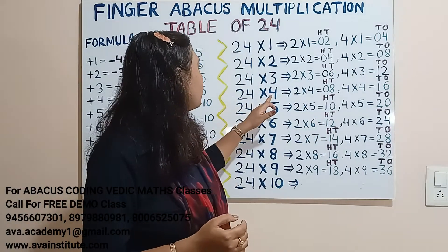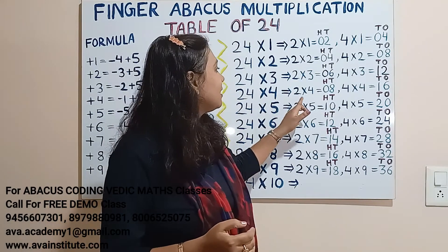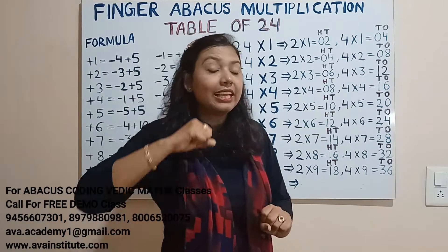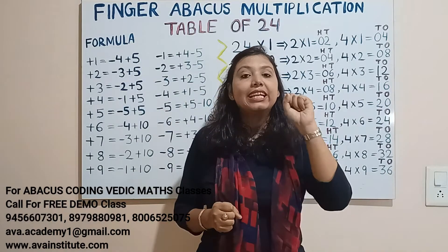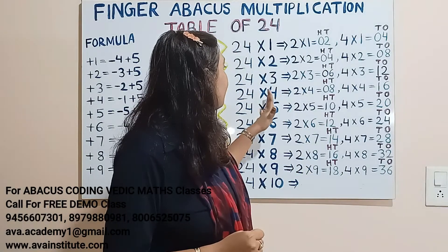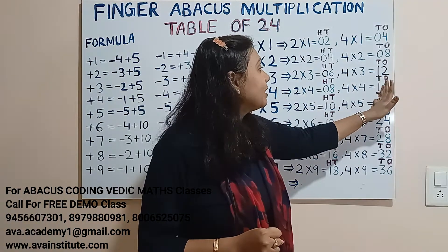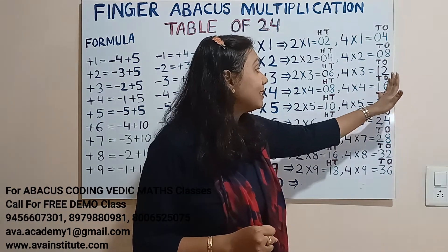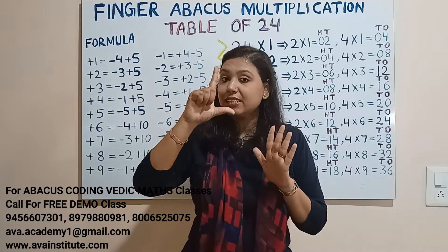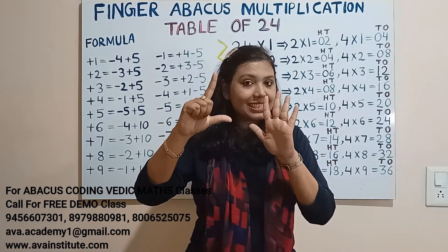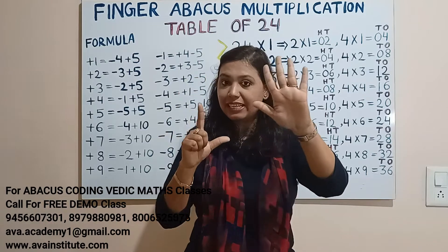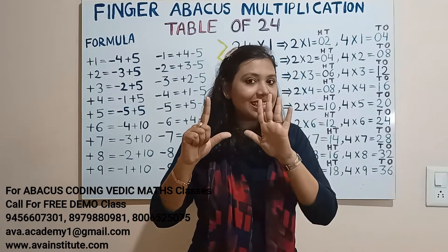Next, 24 fours are: 2 fours are 8 — in hundreds 0, in tens 8. In hundreds we represent 0, in tens we represent 8. Now 4 fours are 16 — in tens 1, in ones 6. In tens we represent 1, in ones we represent 6. So the answer is 96 — that is 90 plus 6, so 96.